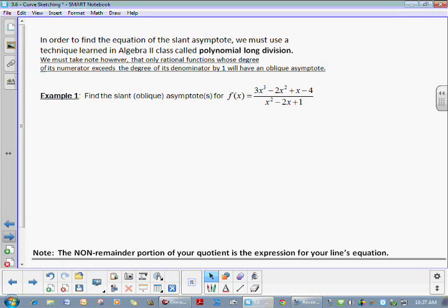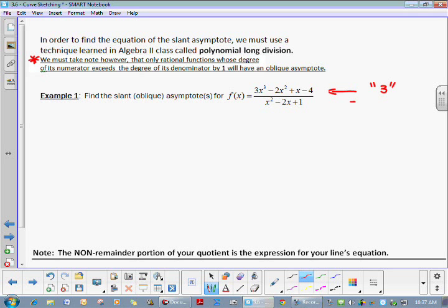So if we go ahead and take a look at this particular problem, we will investigate the slant asymptote. And I'd like you to take a very good look at what's underlined here, because this is very important. We must take note that only rational functions whose degree of its numerator exceeds the degree of its denominator by 1 will have an oblique asymptote. In other words, if you look at the top and you say, what is the highest power of x on top? Well, in that case, that would be a 3. And then you look down here on bottom and say, what's the highest power of x there? In this case, 2. This would be a scenario where you would have an oblique asymptote. In any other type of situation where the degree of the top is not one bigger than the denominator, you will never have the slant asymptote. This will be pretty clear why that's true in just a moment.